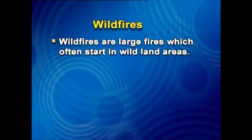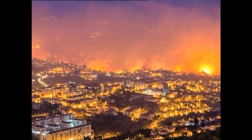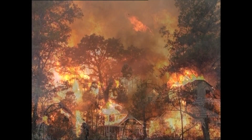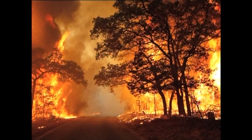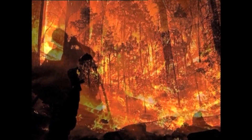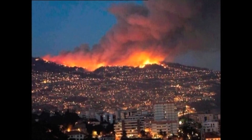Wildfires. Wildfires are large fires which often start in wildland areas. Common causes include lightning and drought, but wildfires may also be started by human negligence or arson. They can spread to populated areas and be a threat to humans, property, and wildlife. Notable cases include the 1871 Peshtigo fire in the United States, which killed at least 1,700 people, and the 2009 Victorian bushfires in Australia.